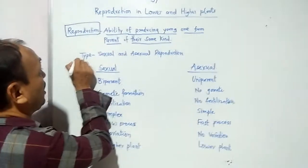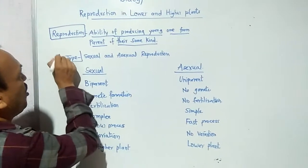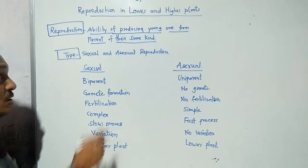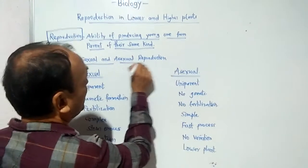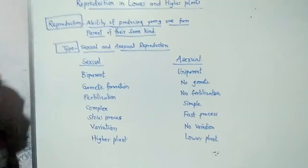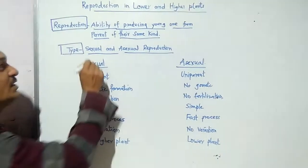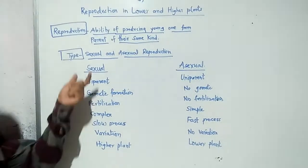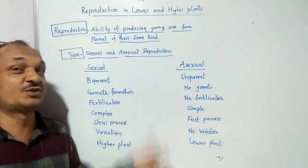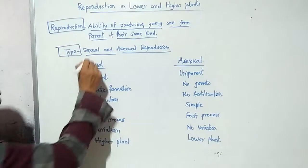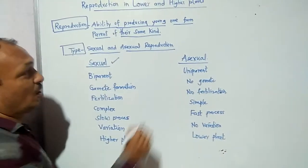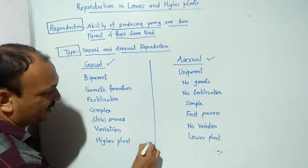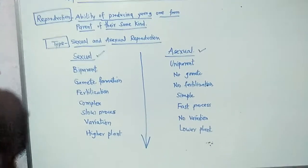Reproduction has types. The major categories of types of reproduction are sexual and asexual. What is sexual and what is asexual? It's a big discussion. Here are some differences between sexual and asexual reproduction.